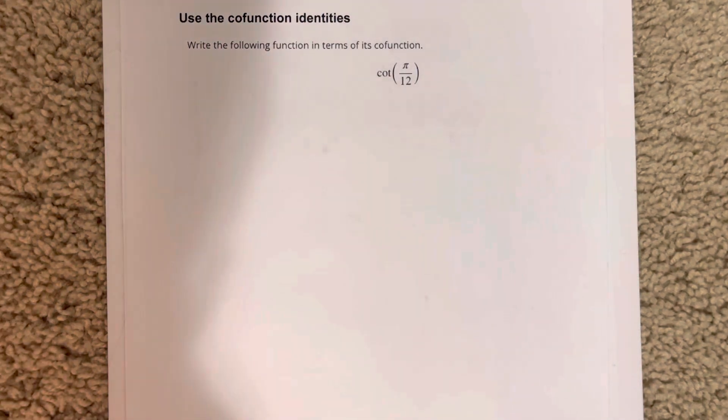In this video, we're going to use the cofunction identities. It says write the following function in terms of its cofunction. So it says cotangent pi over 12.